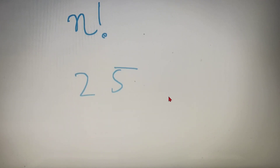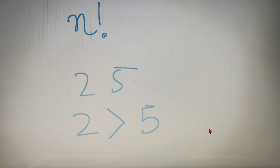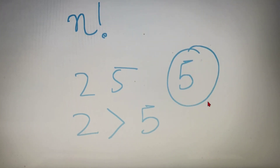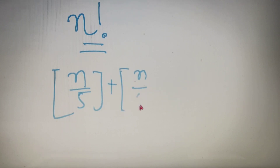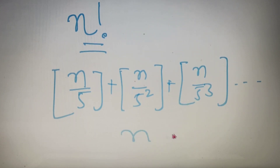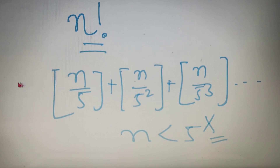Now suppose you have to find out the number of zeros at the end of n factorial. We have to find the number of 2s and number of 5s in n factorial. Since the number of 2s is always greater than the number of 5s in any n factorial, we just have to find out the number of 5s. The formula is: floor(n/5) + floor(n/5²) + floor(n/5³) + … and so on, until n is less than 5^x, where x is an integer. The sum of these values gives the number of trailing zeros in n factorial.